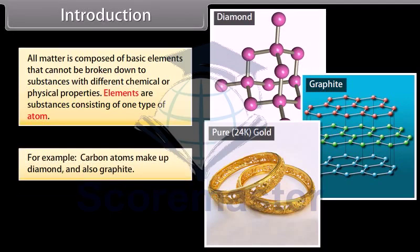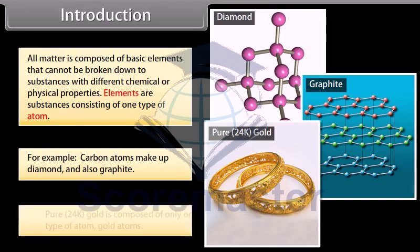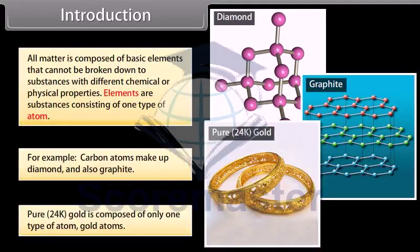For example, carbon atoms make up diamond and also graphite. Pure 24 karat gold is composed of only one type of atom, gold atoms.